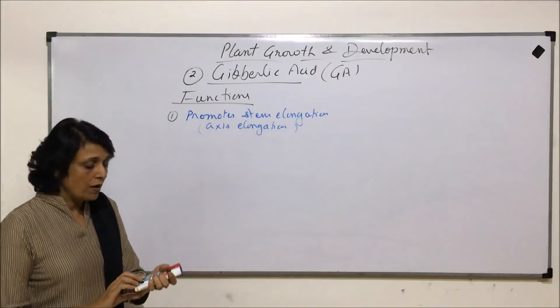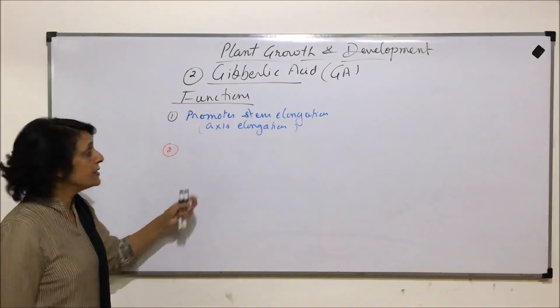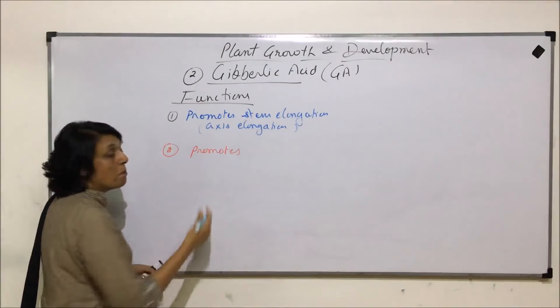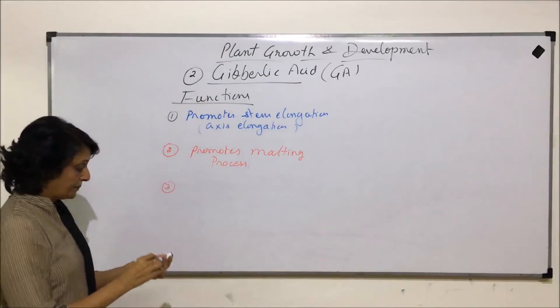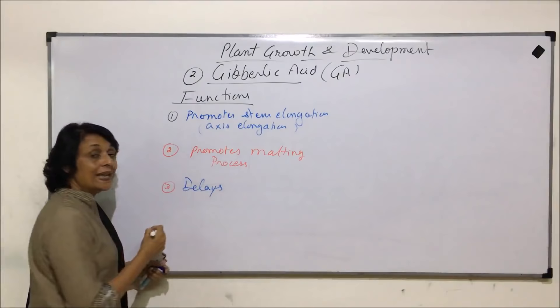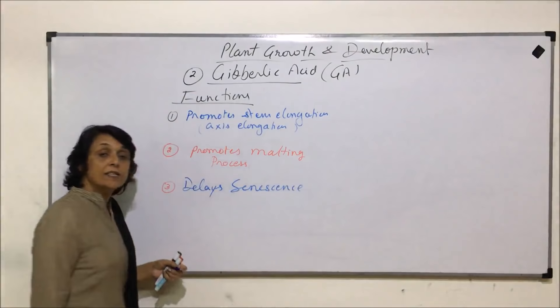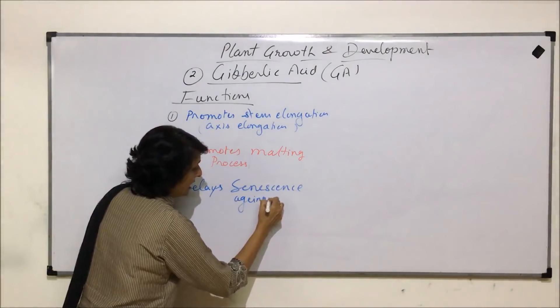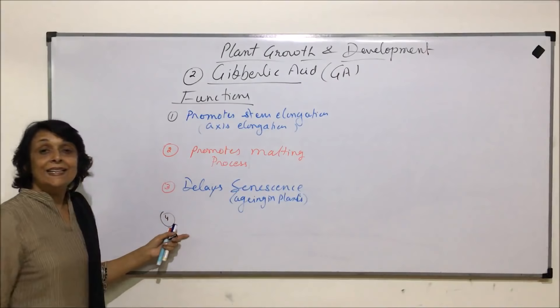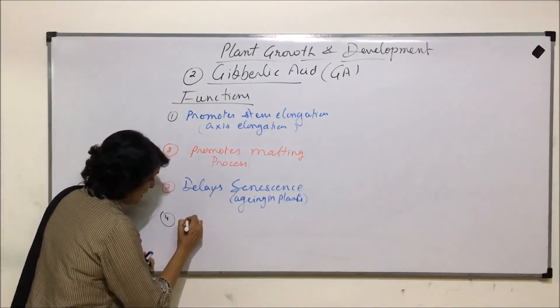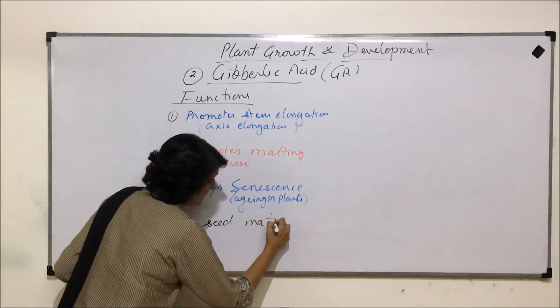The second function is it promotes the malting process. The third function is it delays senescence. Senescence is the term given to aging in plants, so gibberellic acid delays aging, keeping the plant younger for a longer period of time. It also hastens or increases the process of seed maturity.